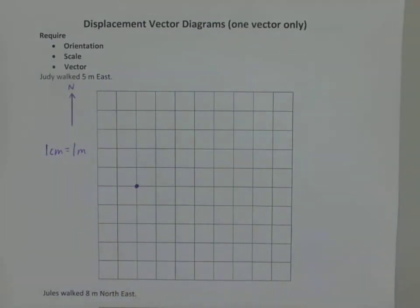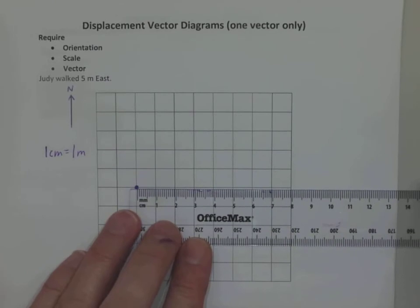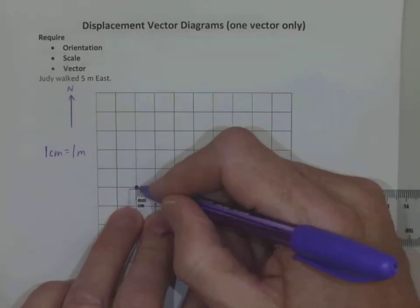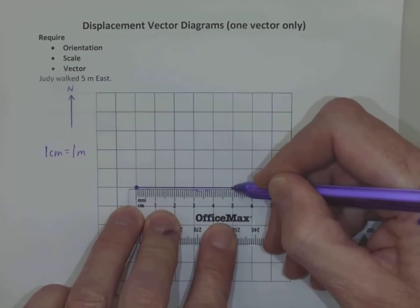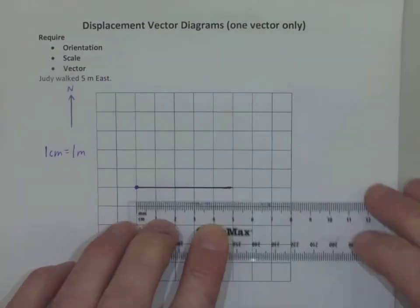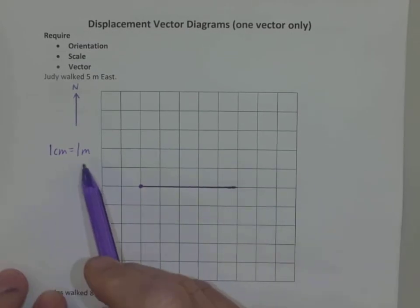Now I can draw in my vector. So if I'm going five meters east and one centimeter is one meter, then five centimeters is five meters. I draw that across here to the value of five meters. My vector has got a length of five centimeters, which gives us a value of five meters.